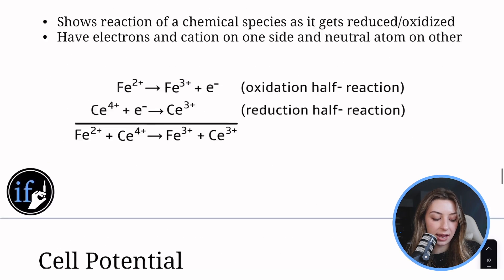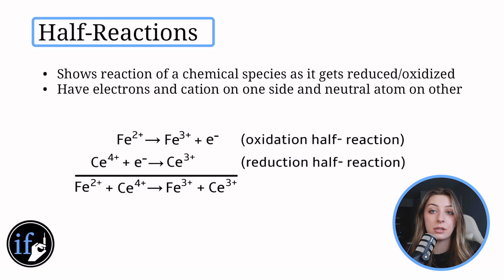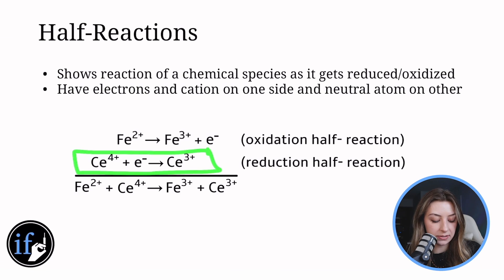So if we go back to this half reaction slide, we could look up values for these. I don't know what they are and you don't have to memorize any of them. But because this one down here is getting reduced in this reaction, I'm going to assume that this one probably has the positive reduction potential and then this one has the negative reduction potential because it wants to get oxidized.